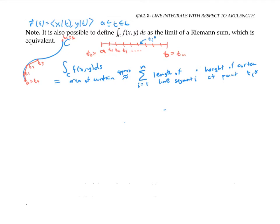And the length of line segment i is given by the square root of x at t_i minus x at t_(i-1) squared—that's the difference in x—plus the difference in y squared. So that's the length of line segment i just using the distance formula. And now the height is given by our function.